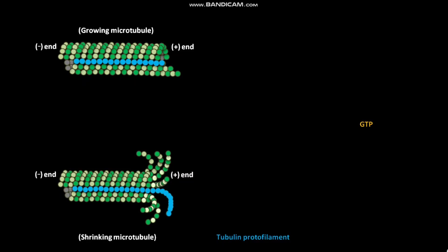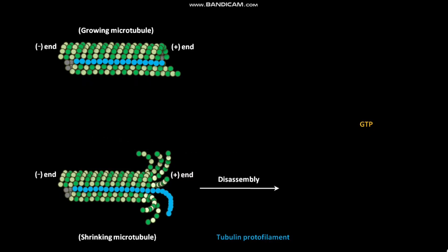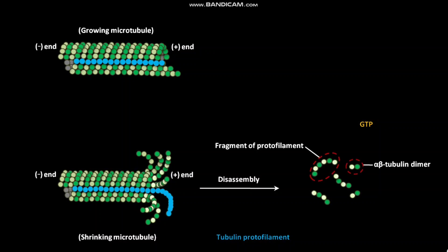Each tubulin protofilament has alpha-beta tubulin dimers. Each alpha-beta tubulin dimer consists of an alpha-tubulin protein and a beta-tubulin protein. The microtubule having GDP-beta tubulin at the end of the protofilaments generally forms a curved structure and undergoes rapid disassembly. Due to this rapid disassembly, fragments of protofilament and alpha-beta tubulin dimers are formed. The fragments of protofilament are made up of repeating alpha-beta tubulin dimers.